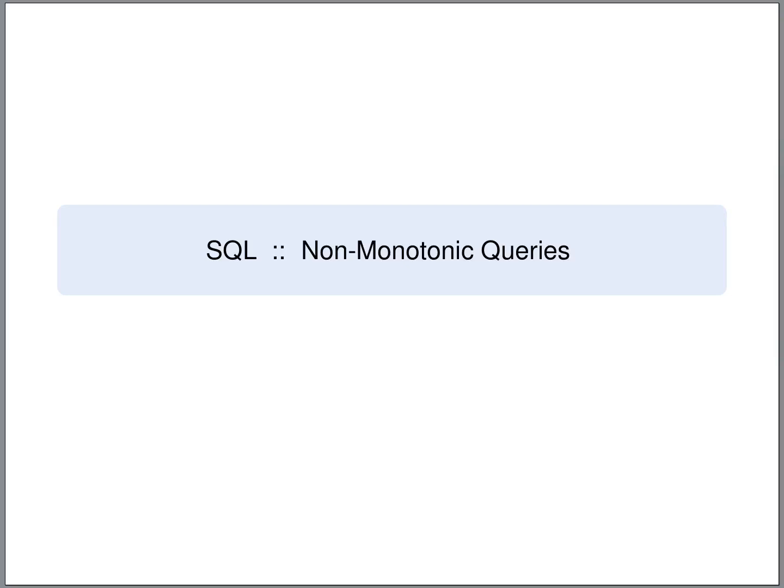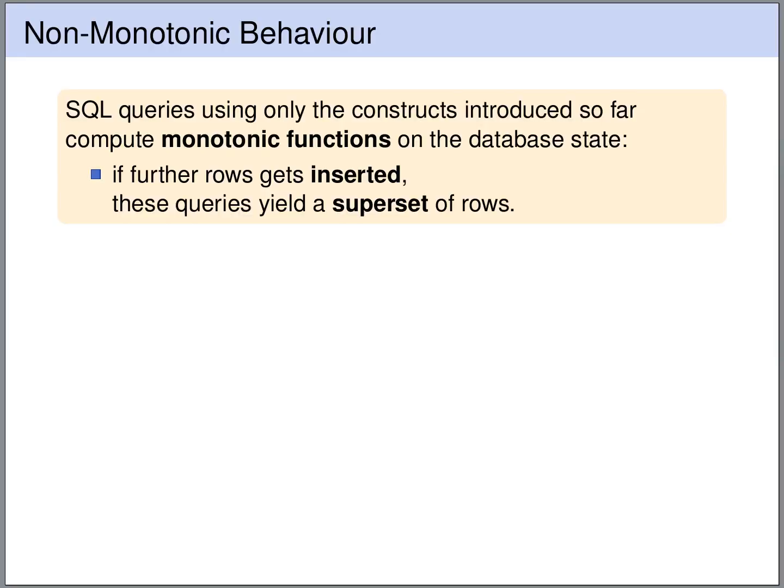Now let's look at the SQL constructs that allow us to formulate non-monotonic queries. A query is said to compute a monotonic function on the database state if the following holds: if we insert more rows into the database, then we do not get less rows in the result of the query — we either get the same rows or a superset of the rows.